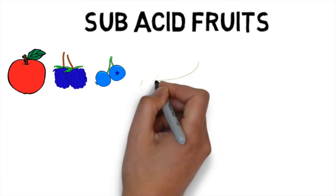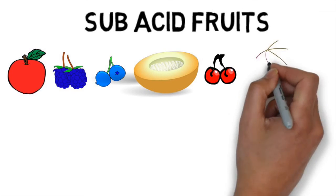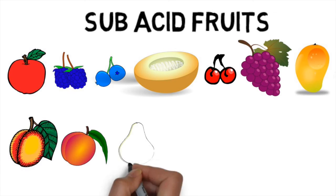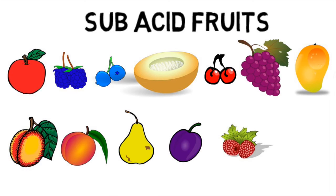Sub-acid fruits are the next best. Apples, blackberries, blueberries, cantaloupe, cherries, grapes, mangoes, nectarines, peaches, pears, plums, raspberries, and watermelon make up this group.